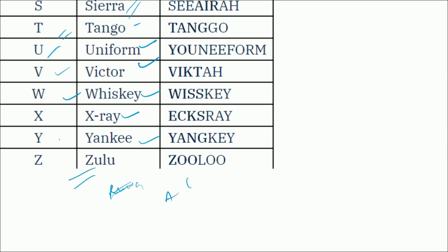Those are the alphabets A to Z — just listen to those words again so that you get used to them. Now we'll move ahead with numbers — from 0 to 9 — and how these numerals are named in aviation.